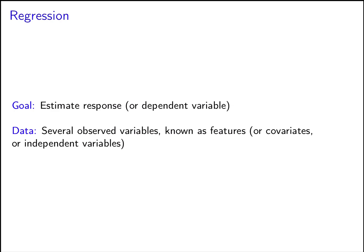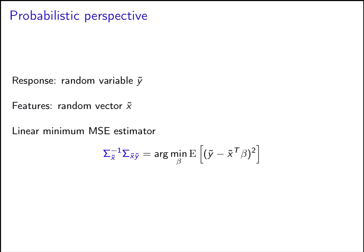Let me remind you that we're interested in the regression problem, where we want to estimate a response — a certain quantity of interest — from some observed variables, which we know as features in machine learning, or sometimes as covariates or independent variables in statistics. You should go watch the video on mean squared error estimation if you haven't, but let me give you a quick recap. There we modeled the response as a random variable y, the features as a random vector x, and we derived the linear minimum MSE estimator.